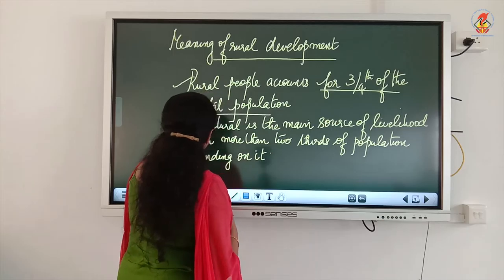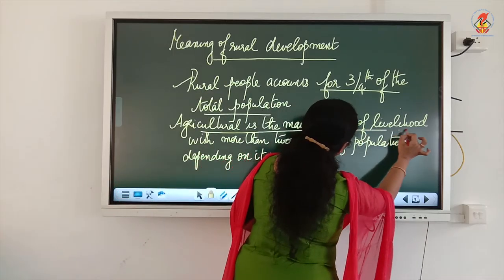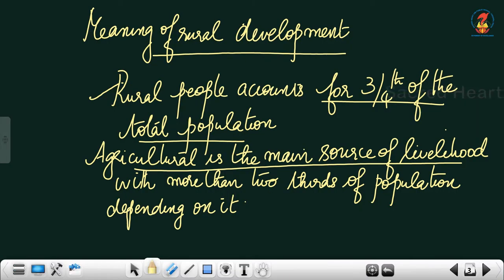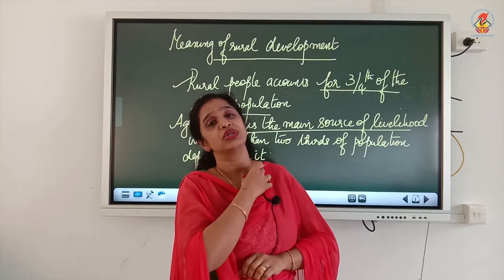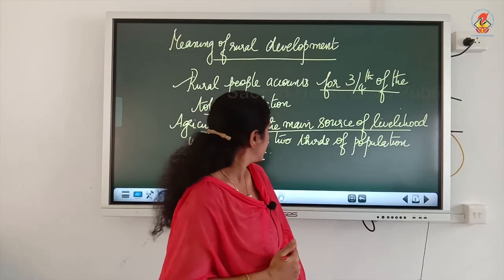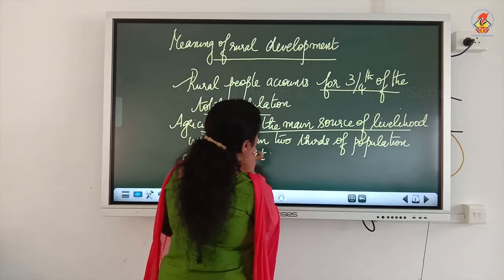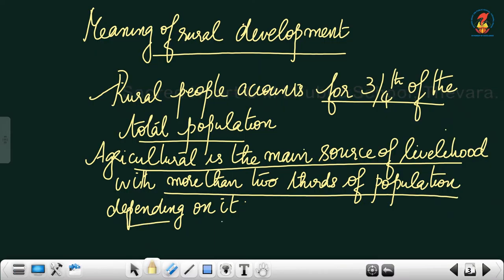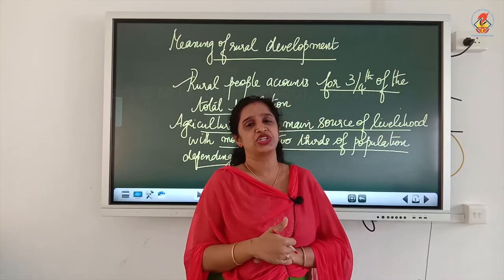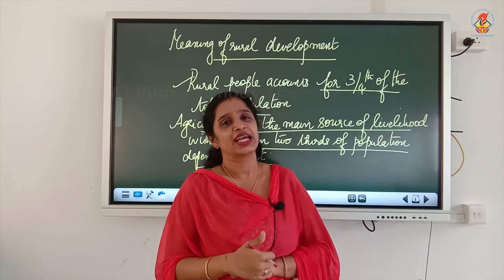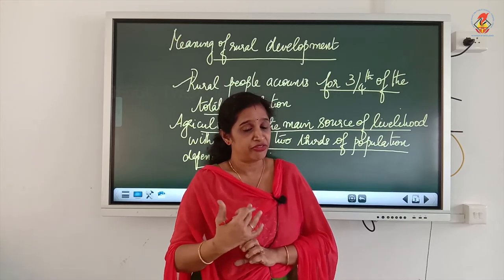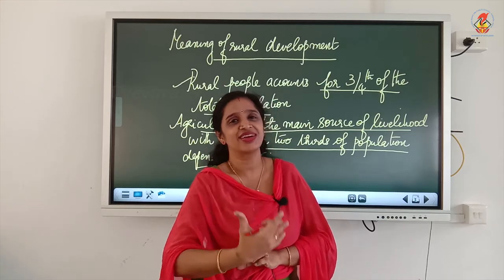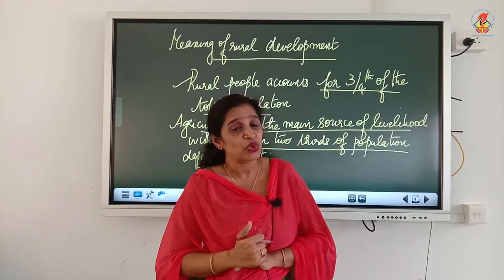Second point: agriculture is the main source of livelihood for people living in the rural areas, with more than two-thirds of the population depending on it. So what is the need for rural development? From these two points it is very clear that there is a strong need for rural development.